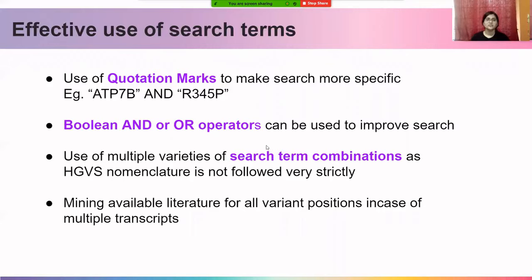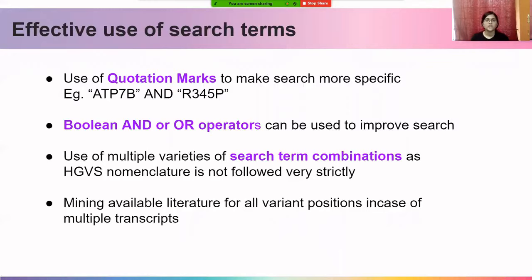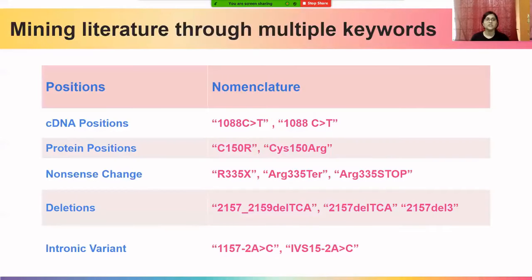One also needs to remember to search with positions only, because sometimes variant positions are written correctly while the changes are written in different formats. Another important point is that sometimes there are multiple transcripts of a gene, and we need to search for each one, since cDNA positions and protein positions might vary slightly. Different publications might report the same variant with reference to different IDs, meaning protein and cDNA positions may vary slightly, but they are all referring to the same variant. Hence, we need to patiently search using each and every protein change and cDNA change.